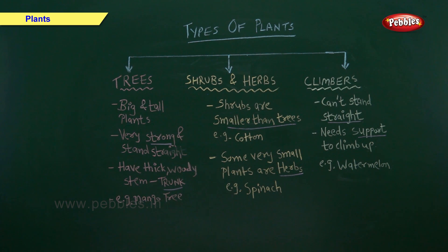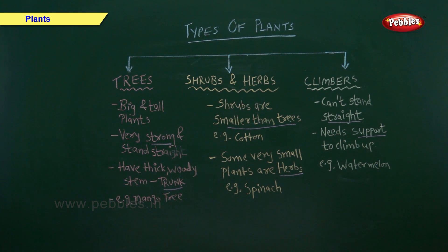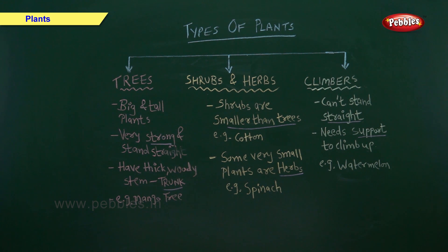Now let us revise it once again. Types of plants — there are mainly three types of plants: trees, shrubs and herbs, and climbers. First, let us have a look at trees. Trees are big and tall plants. They are very strong and stand straight. They have a thick and woody stem known as trunk. Some examples of trees are mango tree, coconut tree and neem tree.